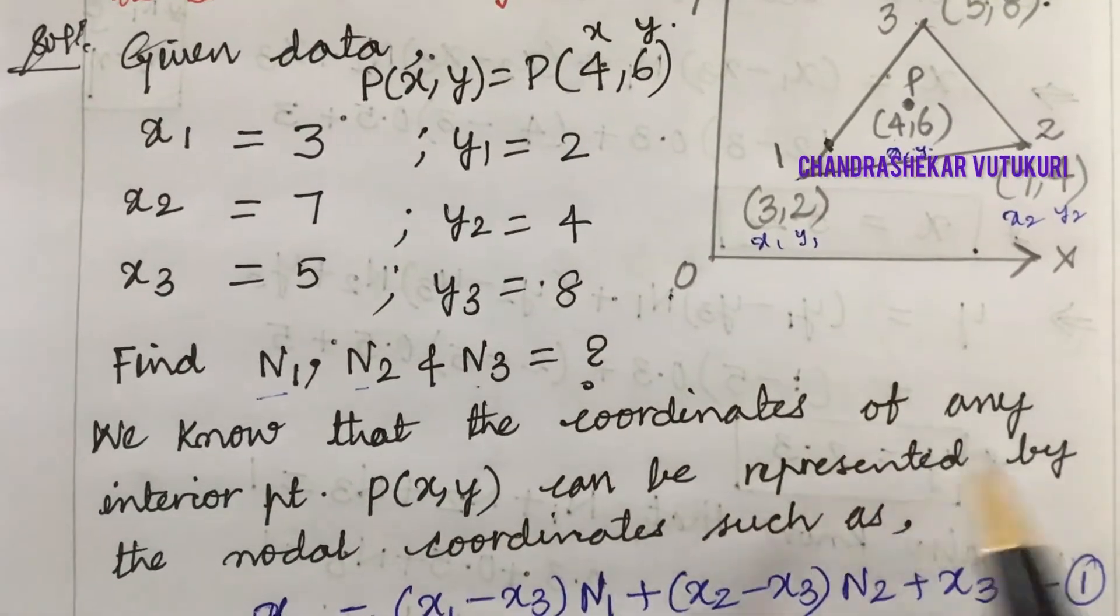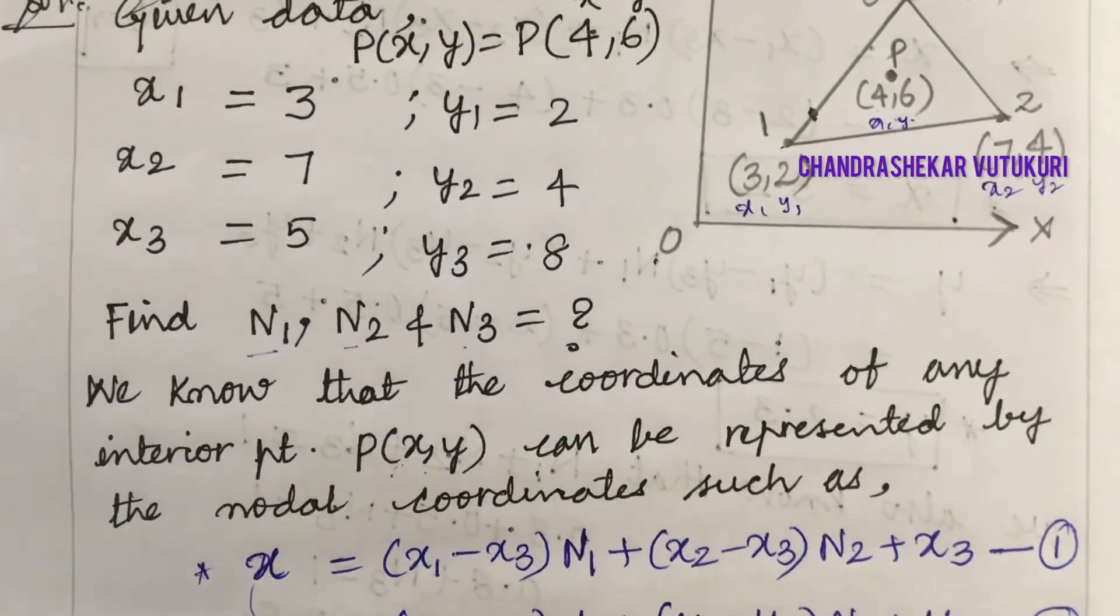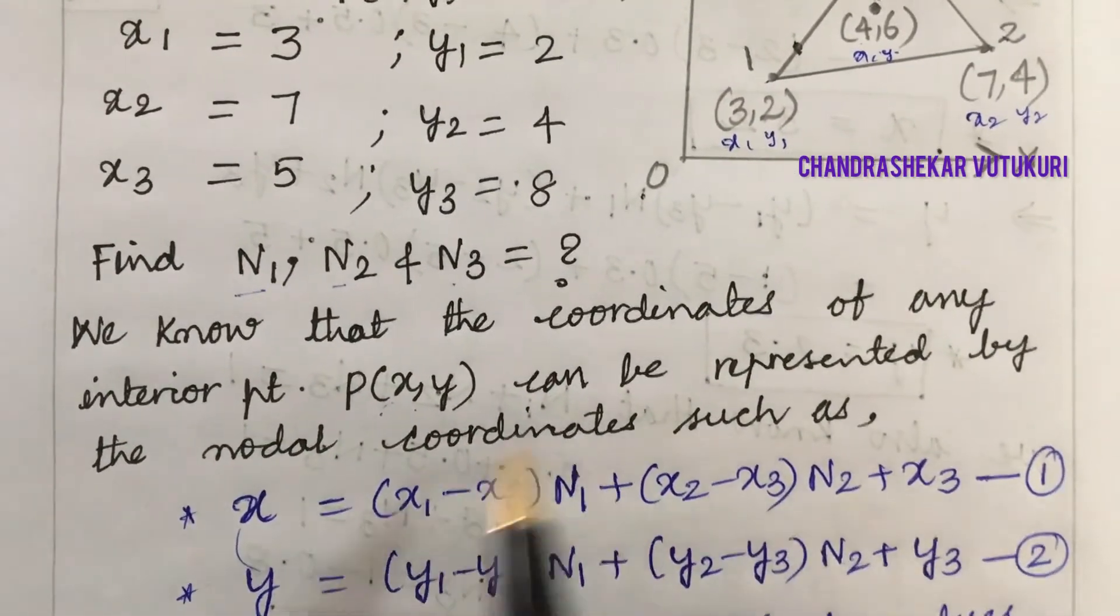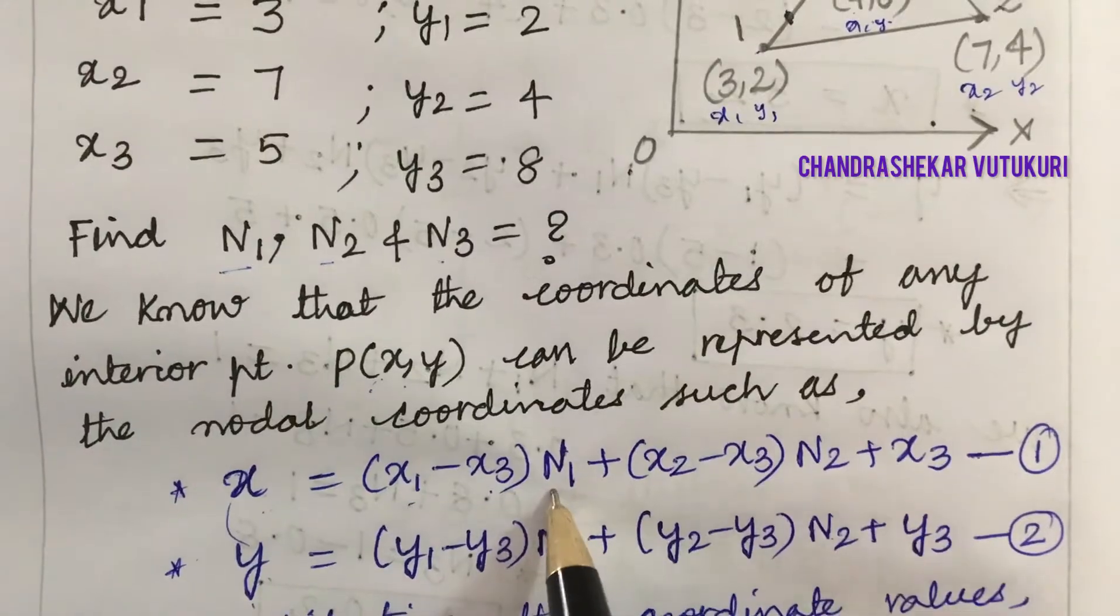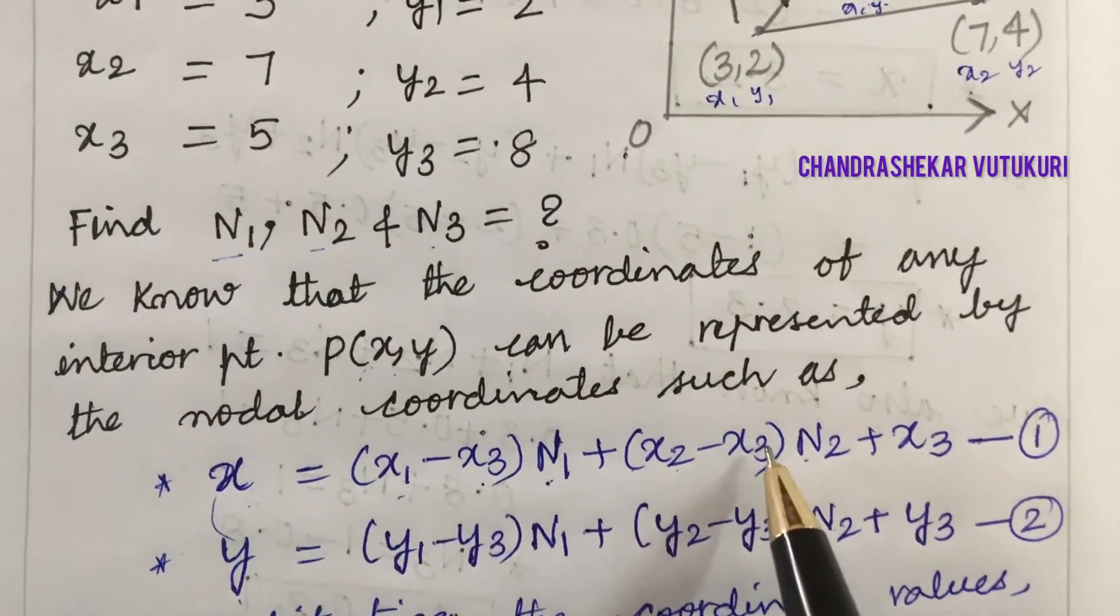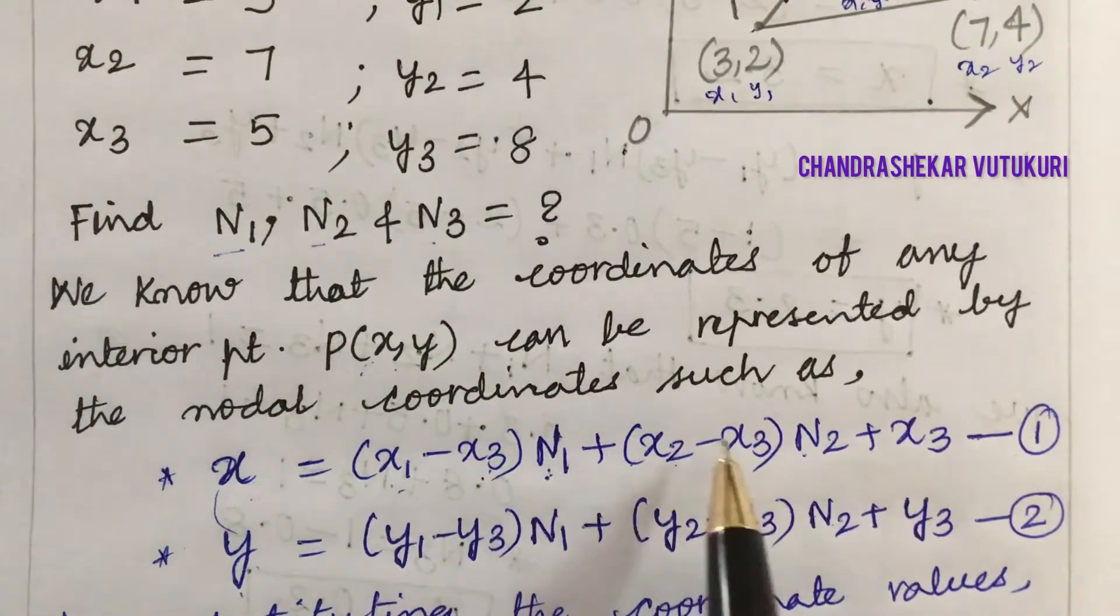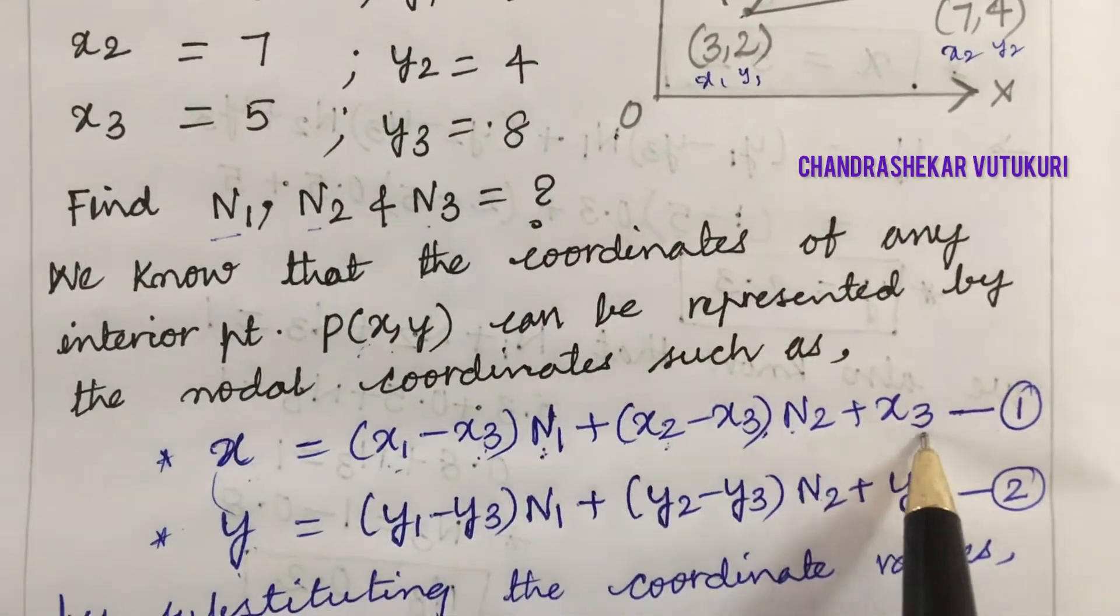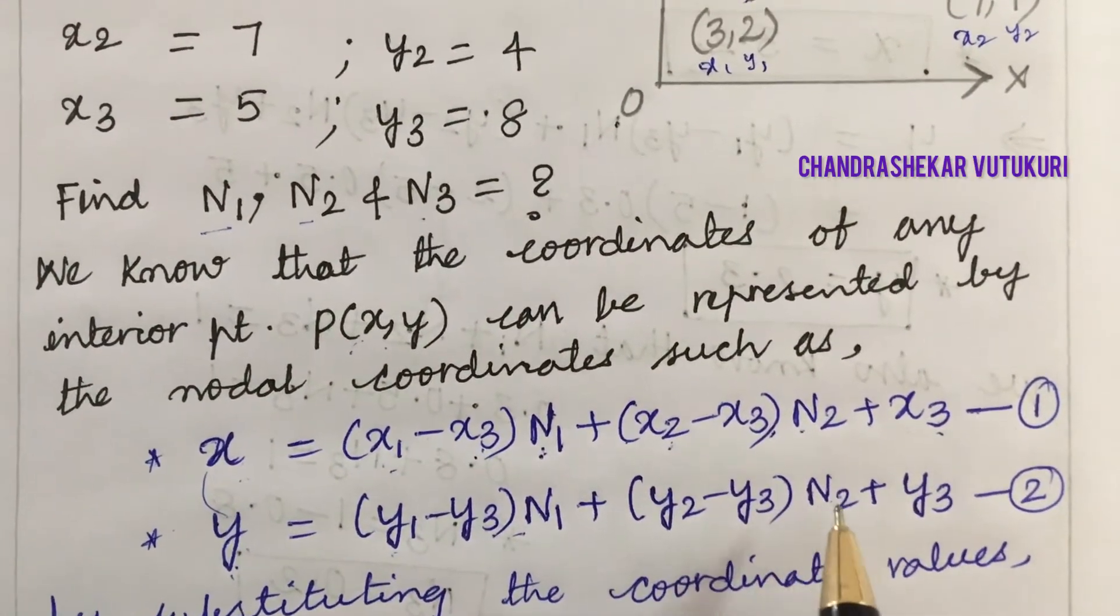We know that the coordinates of any interior point P(x,y) can be represented by the nodal coordinates. From the derivation for constant strain triangles, x is given as x = (x1-x3)N1 + (x2-x3)N2 + x3. Similarly, y can be written as y = (y1-y3)N1 + (y2-y3)N2 + y3.